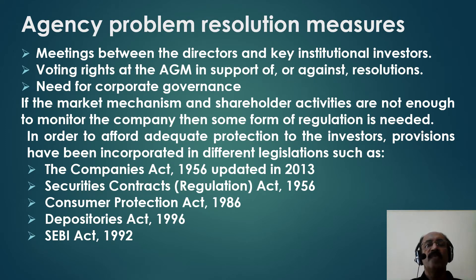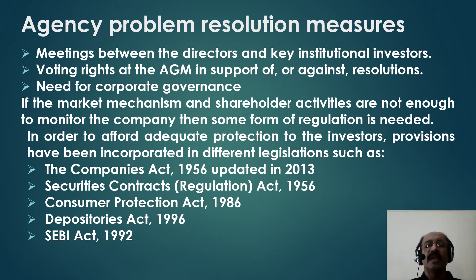How do we resolve the problems of agency? Through meetings between directors and key institutional investors, and voting rights at AGMs in support of or against resolutions — voting rights for every shareholder. If market mechanisms and shareholder activities are not enough to monitor the company, some form of regulation is needed. Provisions have been incorporated in the Companies Act of 1956 (updated in 2013), Securities Contract Regulation Act 1956, Consumer Protection Act 1986, Depositories Act 1996, and SEBI Act 1992.